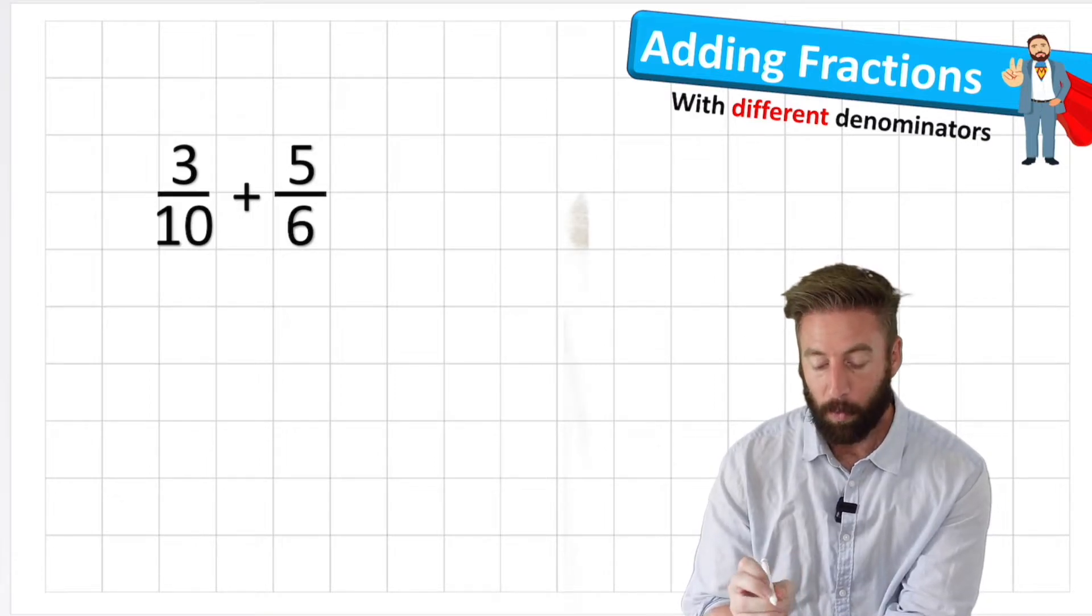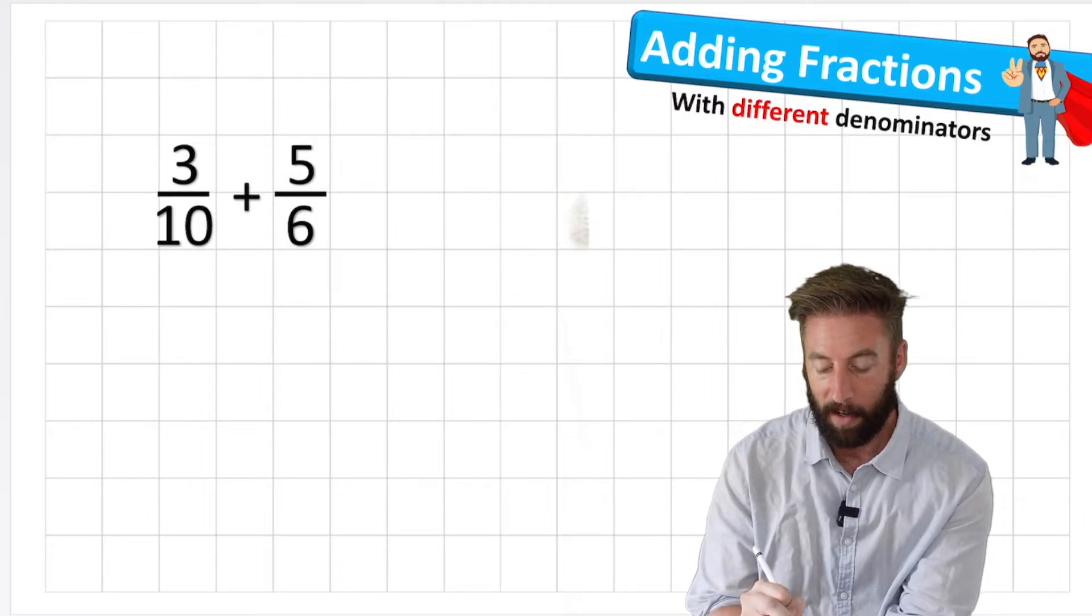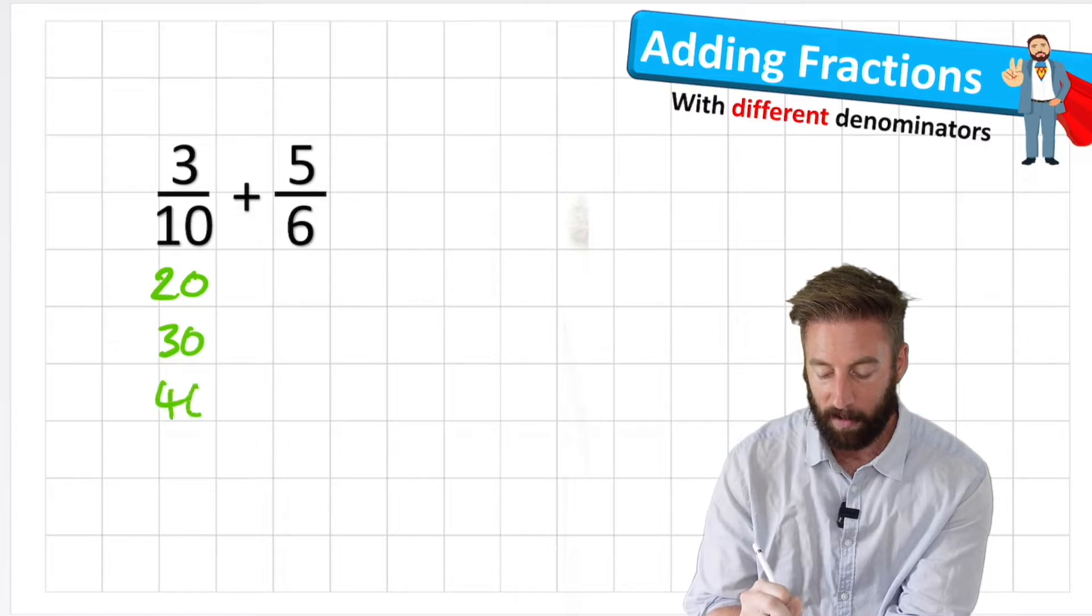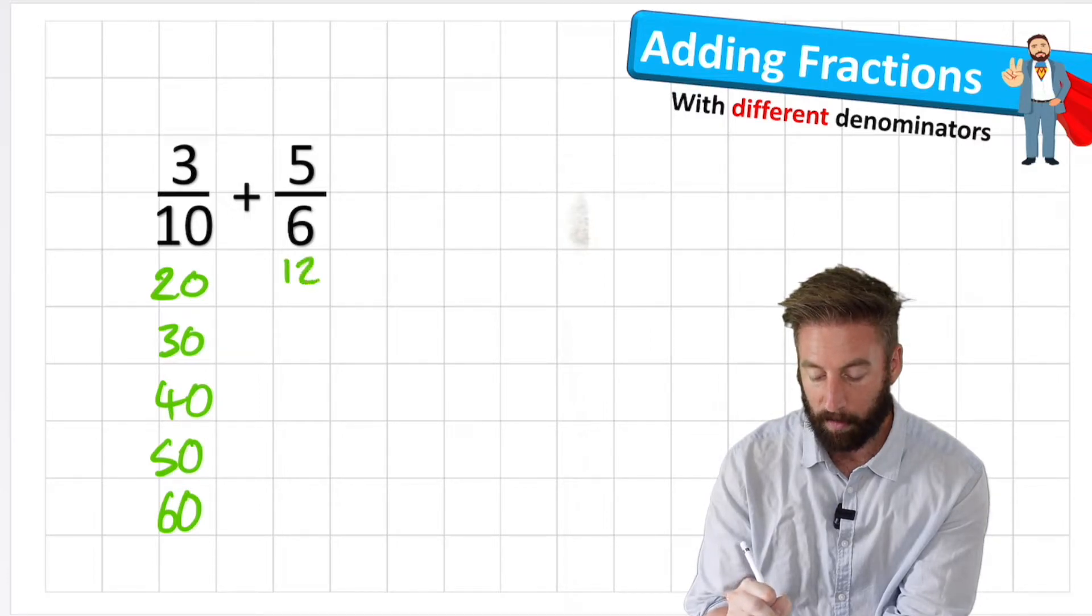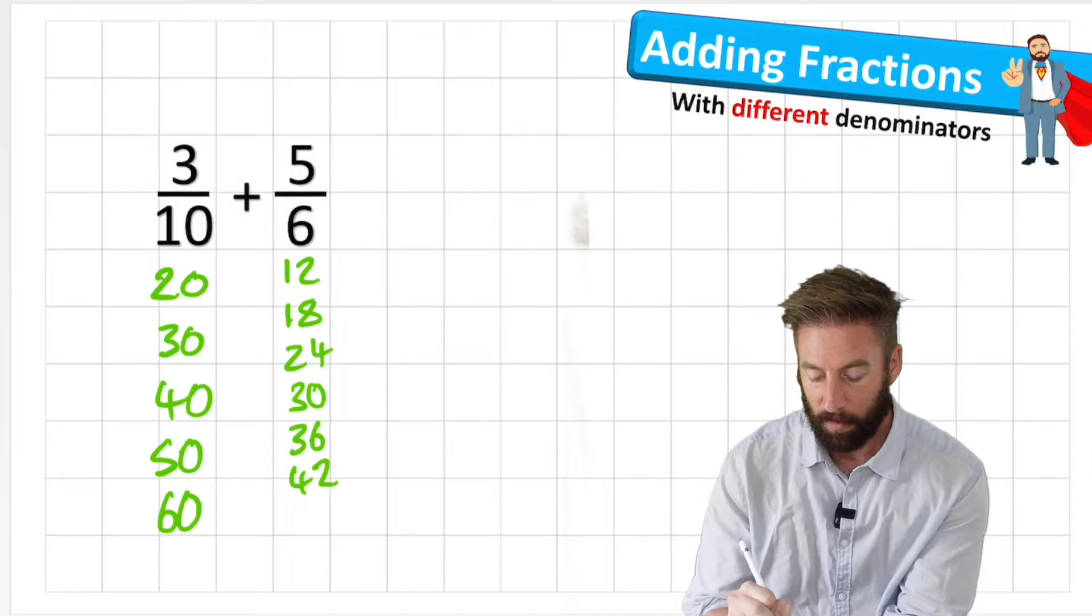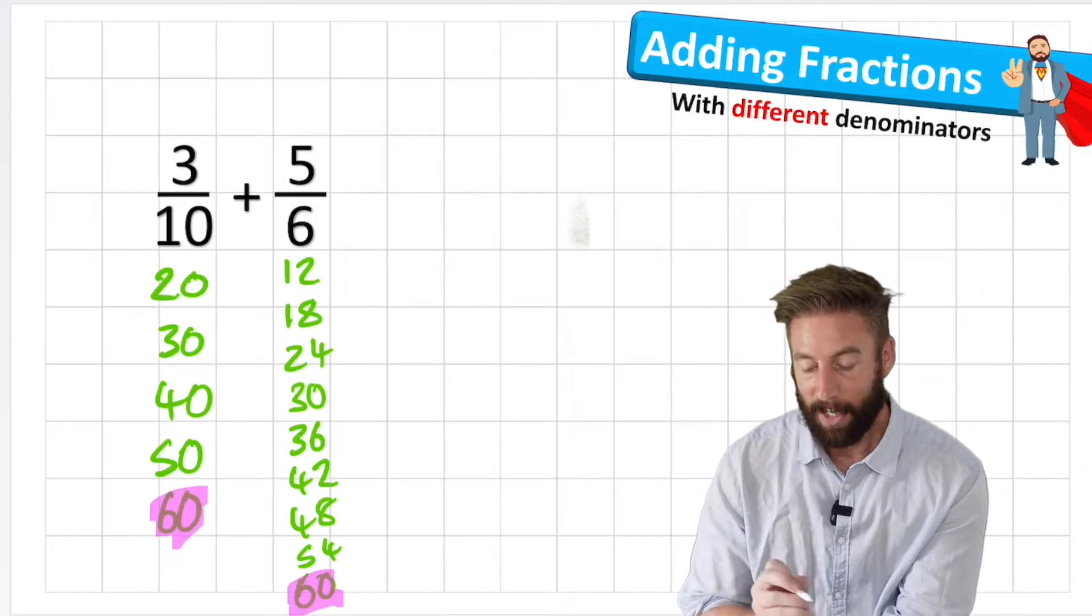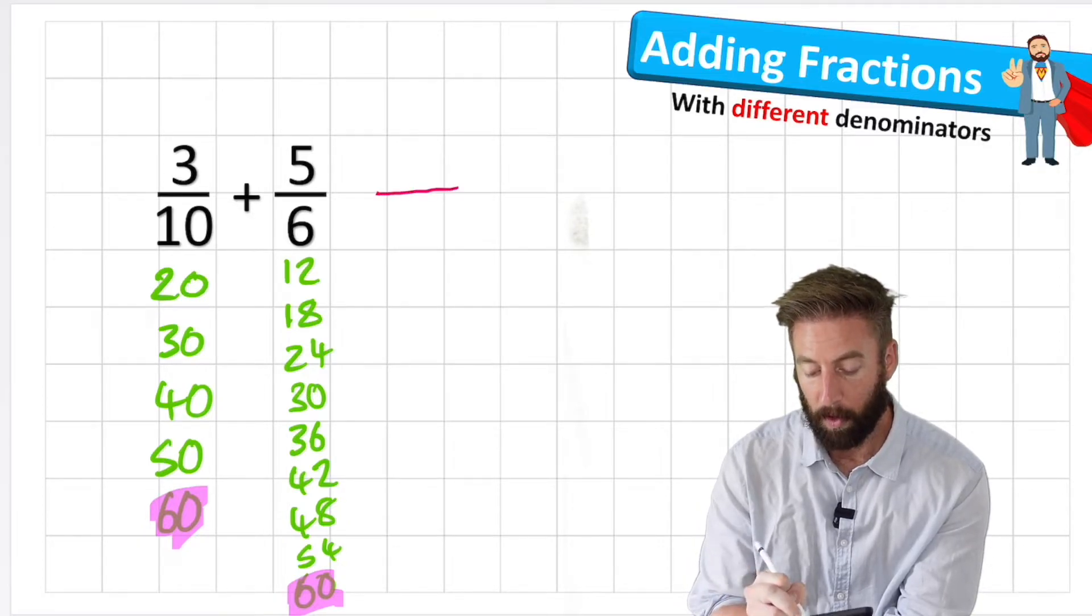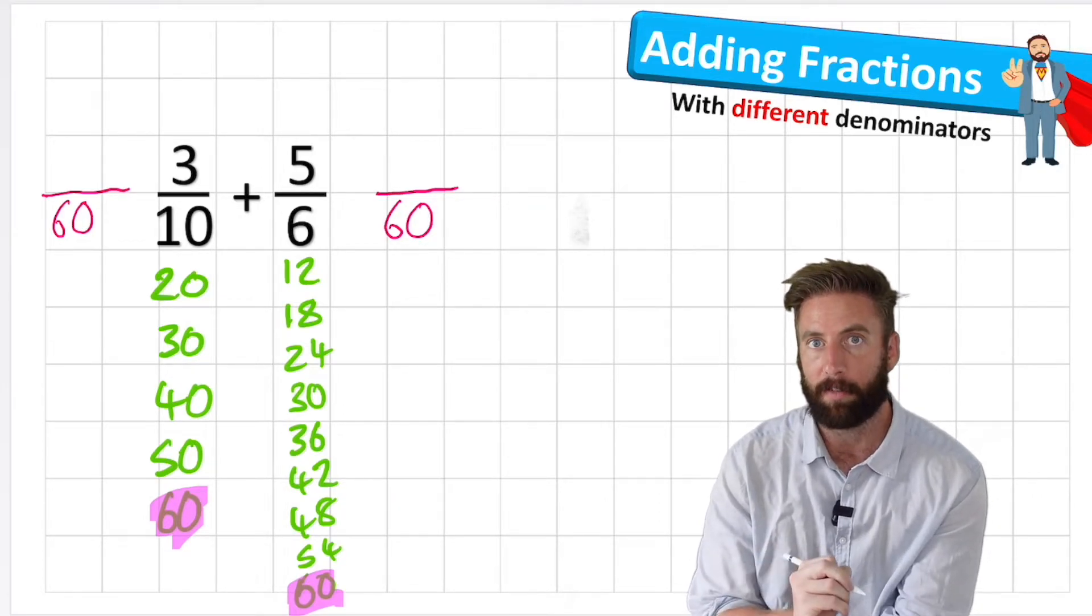Now what we can do is simply try and find a common multiple. I could do 10, 20, 30, 40, 50, 60 and then I'd have to do 6, 12, 18 and I'm looking for ones that match. None so far. 24, 30, 36, 42, 48, 54, 60. Ah, look what I found. I've found a common multiple: 60. So now I can turn my two fractions into a fraction with 60 as a denominator. So I'm actually finding equivalents for both of these fractions now.